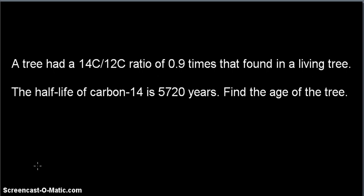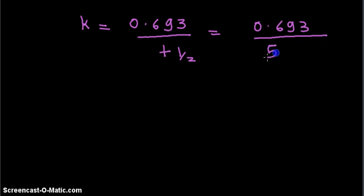The first step to solve this problem would be to find the decay constant for this isotope. Decay constant K is equal to 0.693 divided by T half. Plugging the values we get 0.693 divided by 5720, that is equal to 1.21 times 10 raised to minus 4 per year.